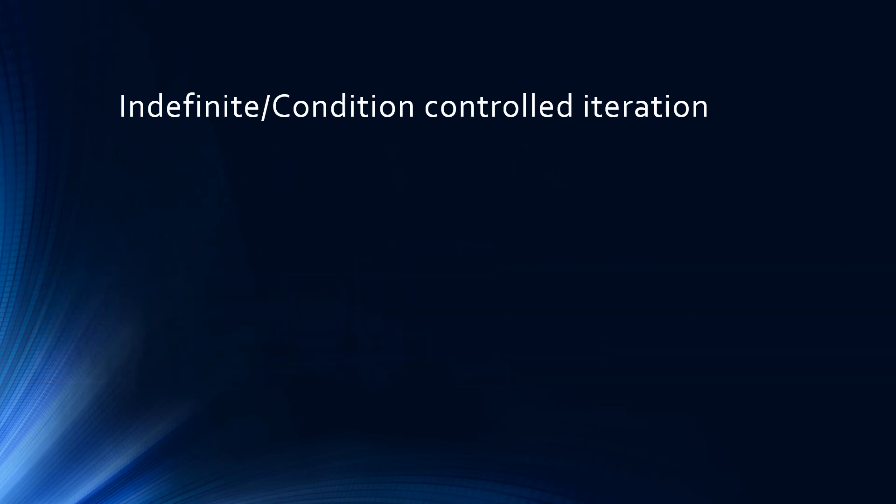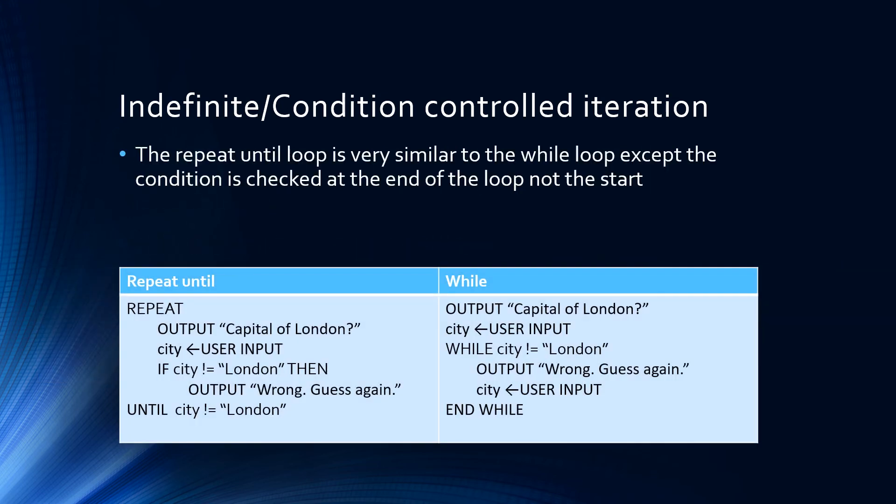The repeat until loop is very similar to the while loop, except the condition is checked at the end, not the start of the loop. This means a repeat until loop will always execute at least once, whereas a while loop may not execute at all if its condition is evaluated as false at the first time of asking.